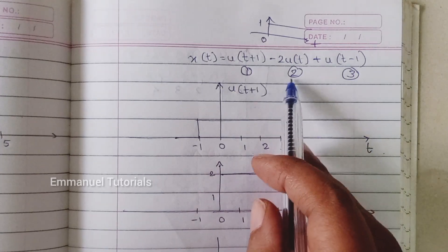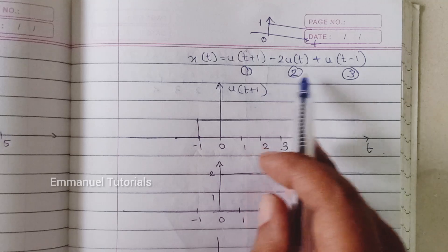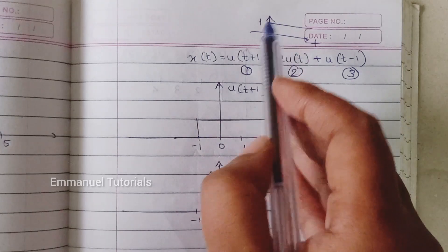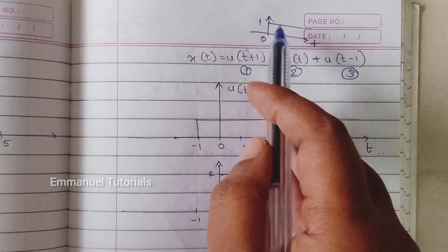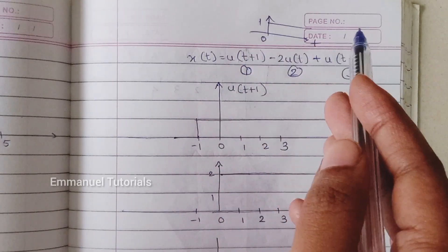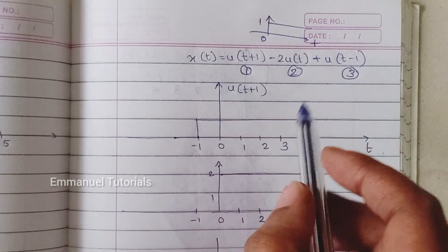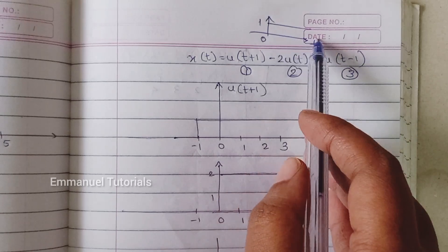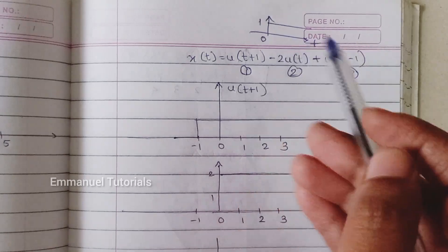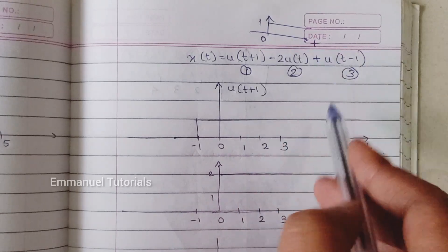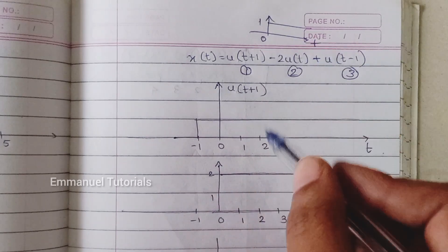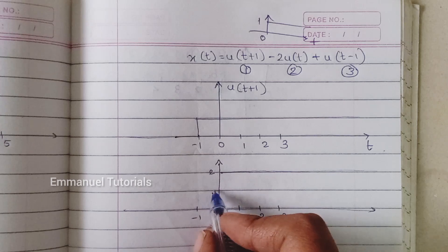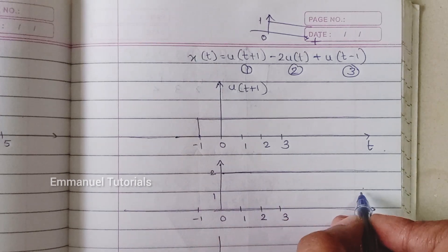The second part is 2u(t). This is u(t) with amplitude scaled by two. The amplitude is one continuously, and when you amplitude-scale by two it's multiplied by two, so the amplitude becomes two continuously from zero to infinity.